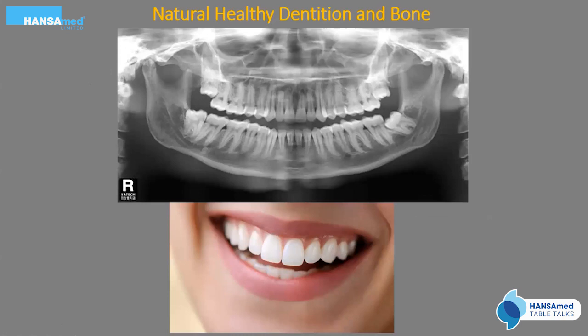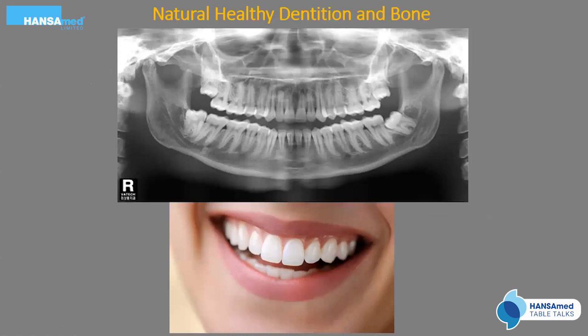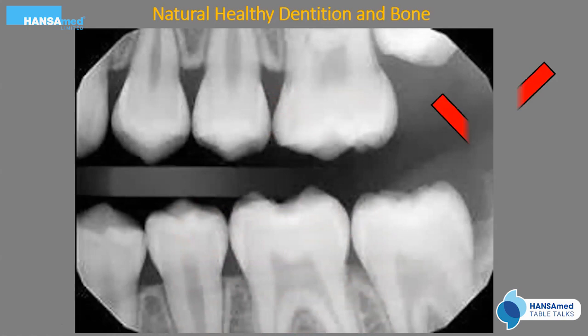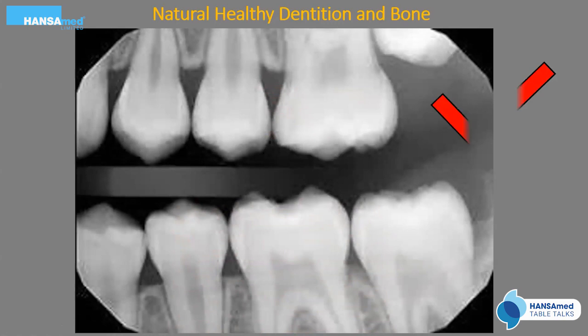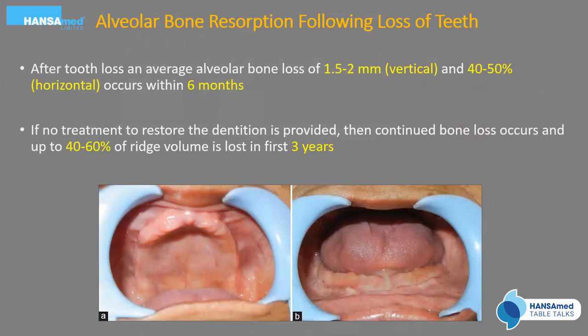As clinicians, we all know the importance of naturally healthy dentition and bone. We should not be depending on OPGs for evaluating bone levels — we should ideally be using bite-wing radiographs. A horizontal bite-wing is shown on screen, and if you're expecting areas with periodontal bone loss, a vertical bite-wing may be more appropriate. A horizontal bite-wing might not be ideal in those cases, so we should not evaluate bone levels on an OPG.